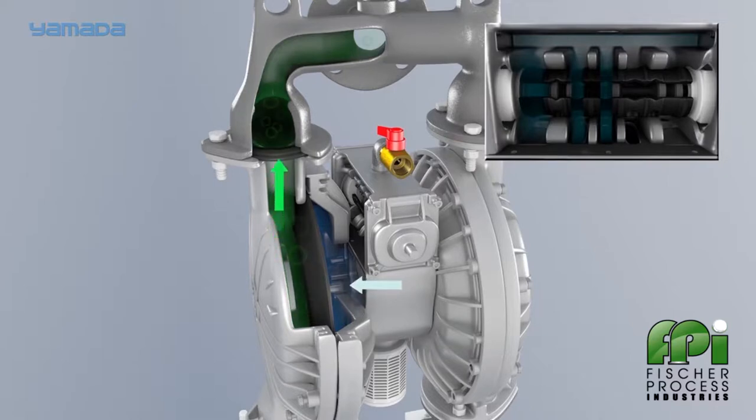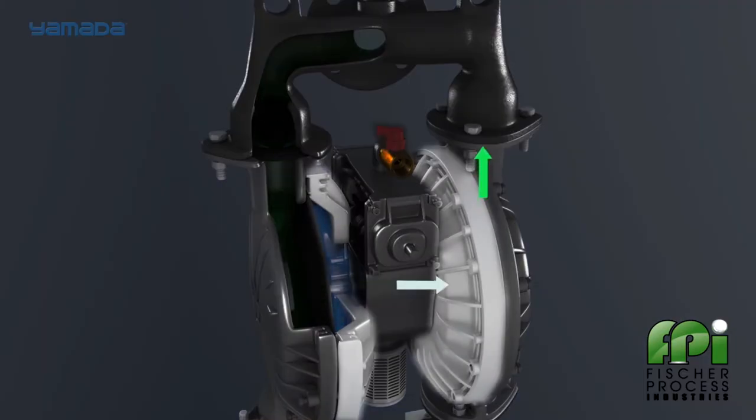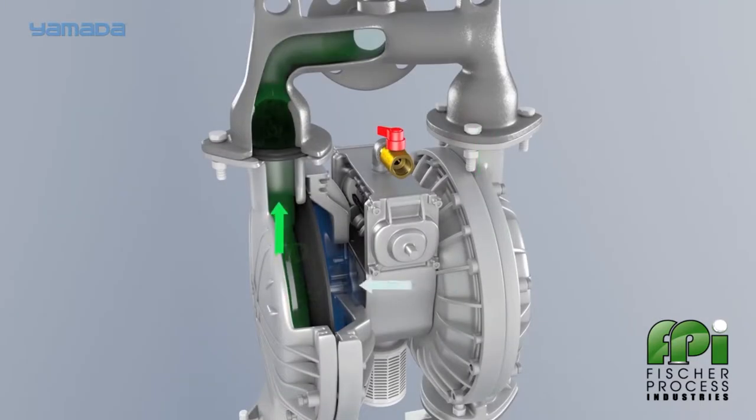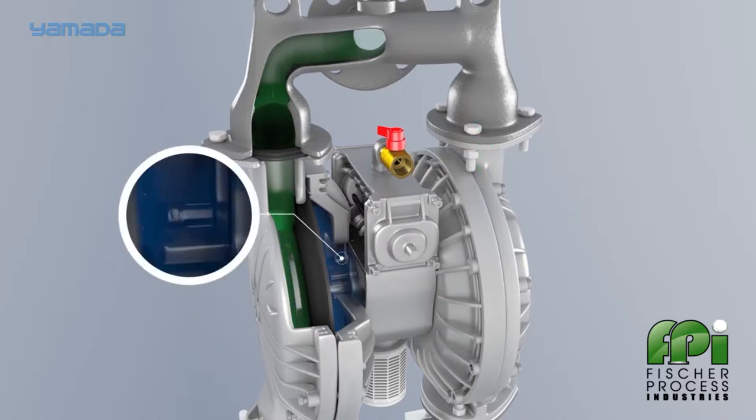As the air enters the chamber, it forces the diaphragm outward. This outward momentum forces liquid out of the discharge ball valve and loads the opposite inlet ball valve. As the diaphragm travels outward, the connected diaphragm on the opposite side is pulling the diaphragm inward. When it travels a full stroke, it will contact the pilot valve, depressing it and breaking the seal to open an exhaust port.